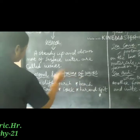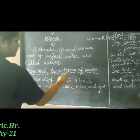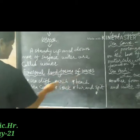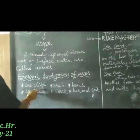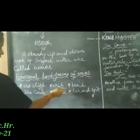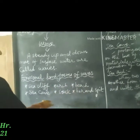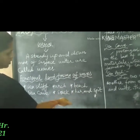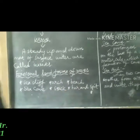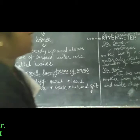Erosional landforms of waves include: sea cliff, arch, beach, sea cave, stump, bar, and spit.